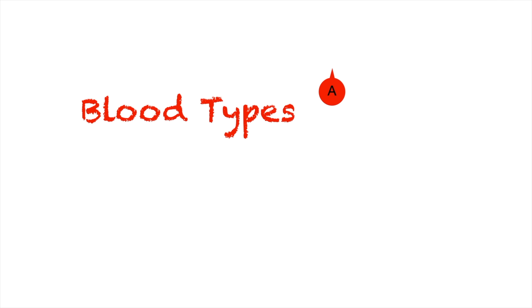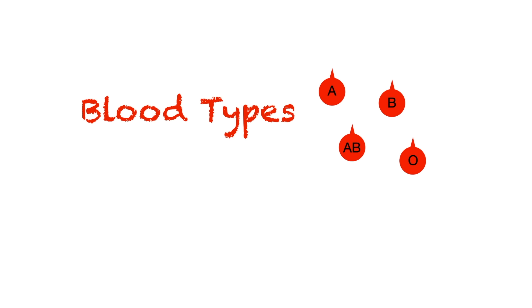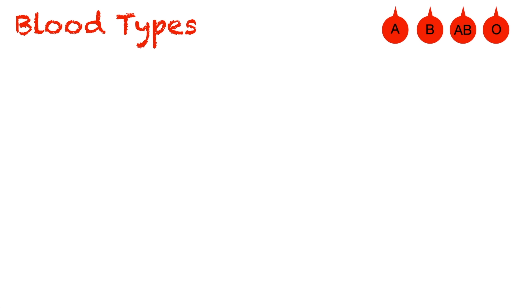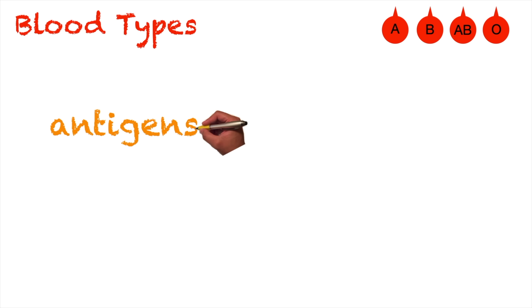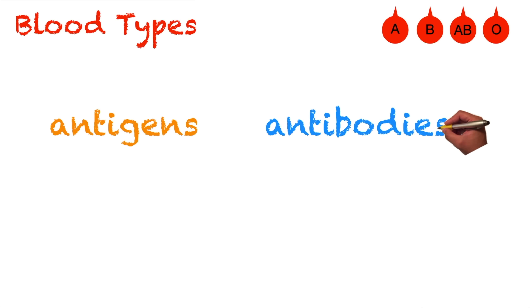Today, we are going to talk about blood types. These blood types are type A, type B, type AB, and type O. For us to understand these blood types, we first need to understand the concepts of antigens and antibodies.